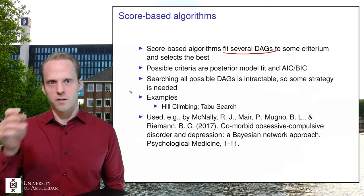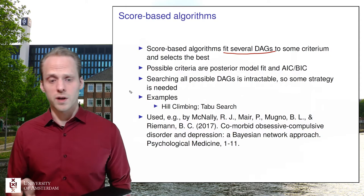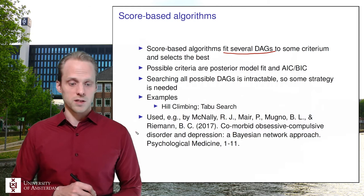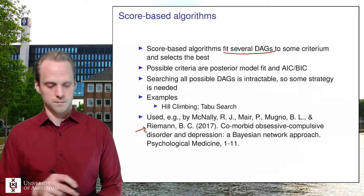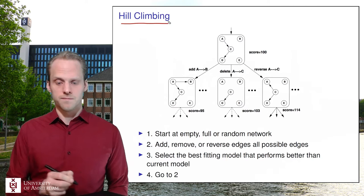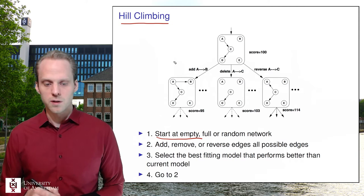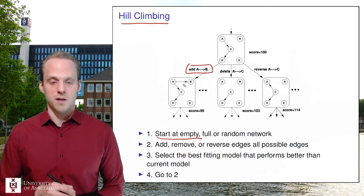You usually can't test all possible DAGs — if you have 10 variables, there are a huge number of possible structures. So you need a search strategy like adding or removing effects until the score improves. This is very similar to search strategies used in undirected network models like the stepwise multi-select algorithm.